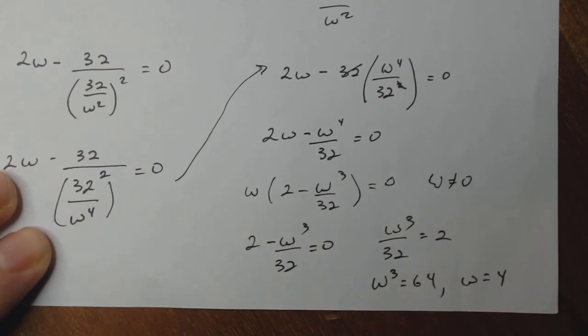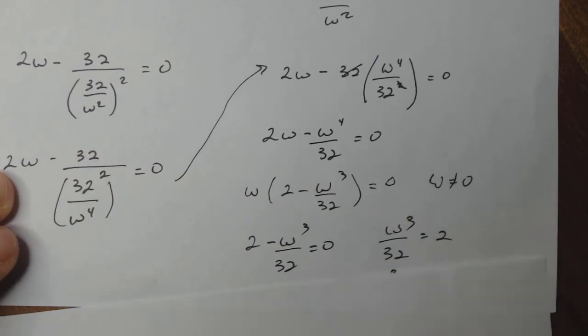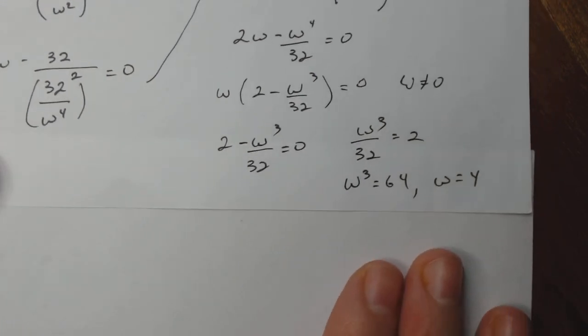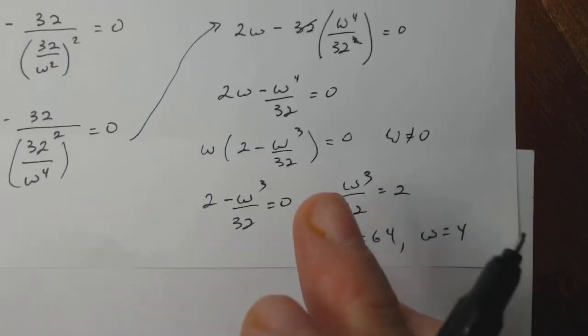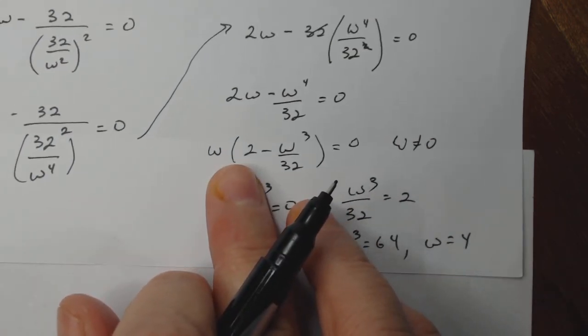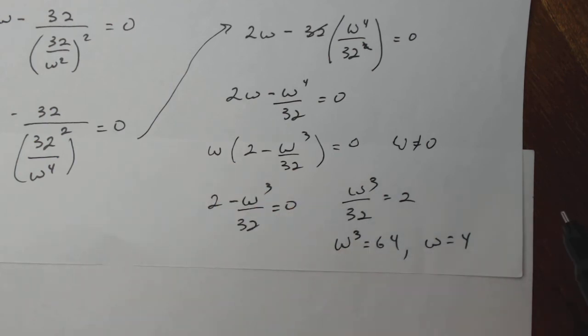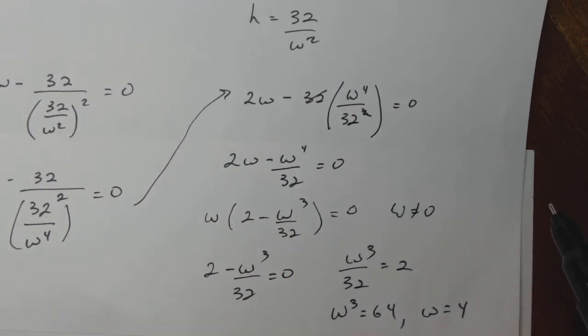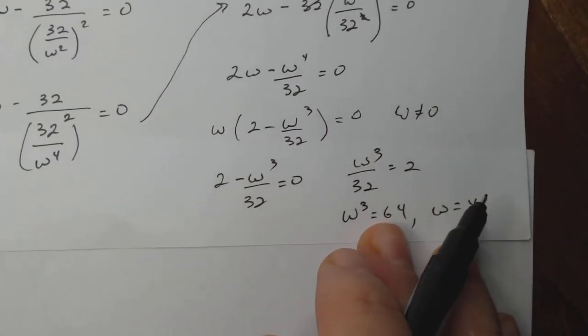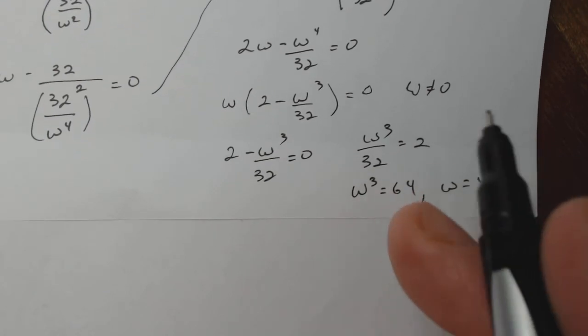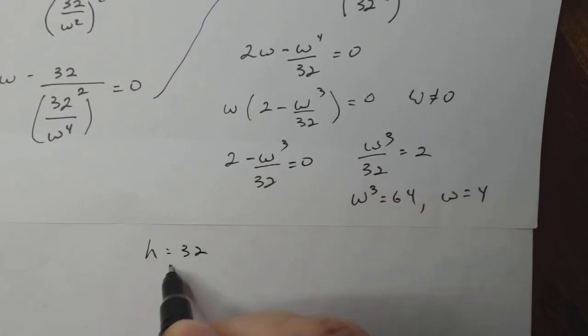Running out of paper here all of a sudden. Let me find another semi blank one here. Now I know that W is four. If W is four, then H is 32 over W squared. H is 32 over 16, which is two.